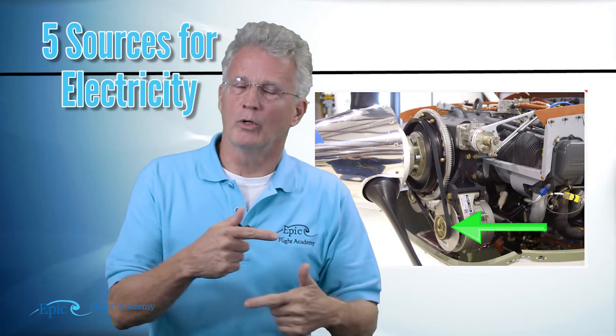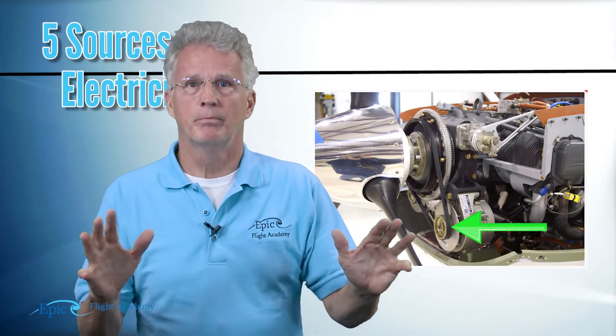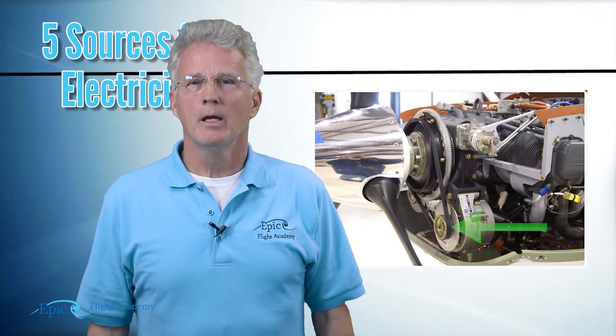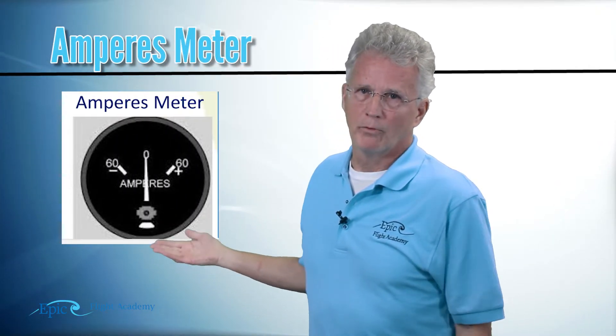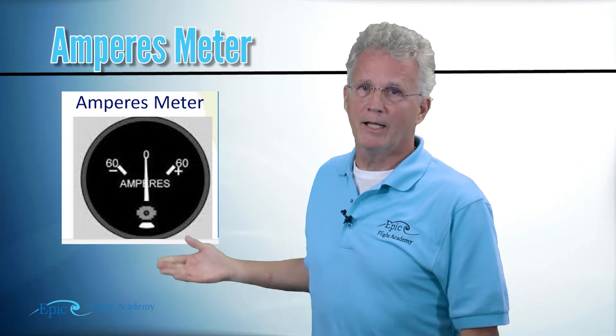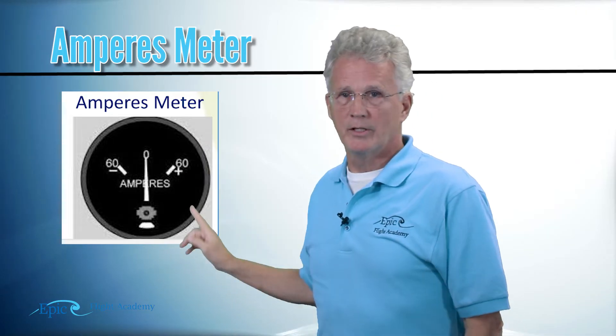When the engine turns, the alternator turns, and that allows the alternator to electromechanically provide current. Now, how much current does my airplane need, and how do I know how much it's getting? There's two primary instruments that are used to tell me how much amperage is in my airplane or being used or being requested by my airplane. The first one is the ampere meter, or for short we say amps meter.